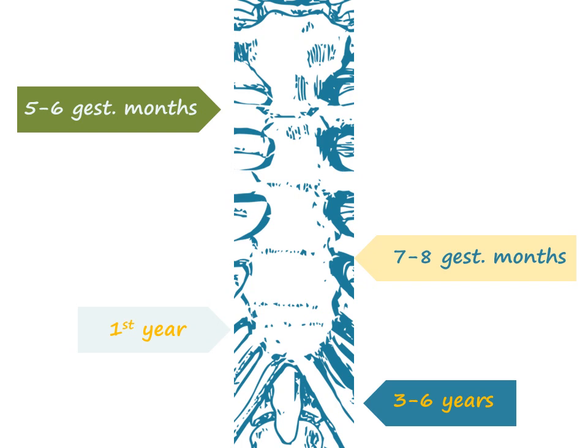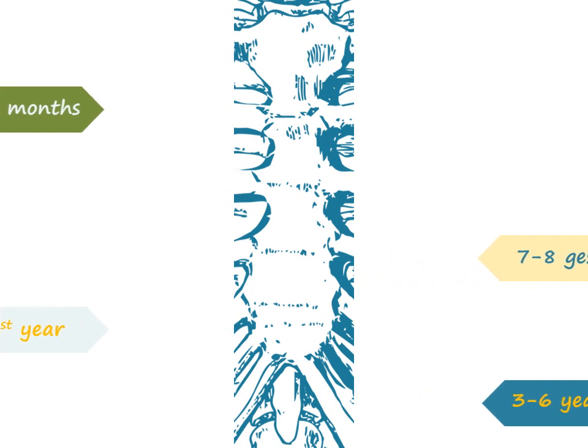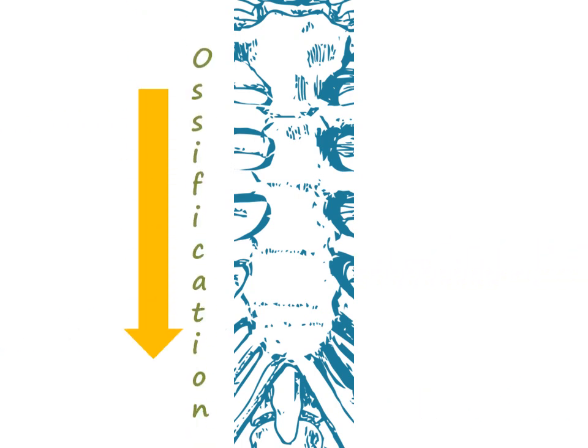but on some individuals this element may only ossify in adulthood. The sternebrae of the body ossify in a cranial-caudal direction, but fusion between these elements occurs in the opposite direction, with the fourth and third sternebrae fusing first, and the first and second sternebrae fusing last.